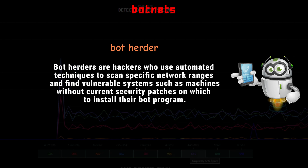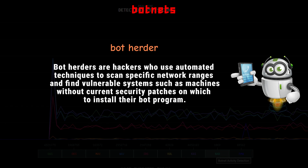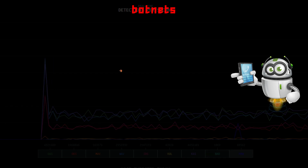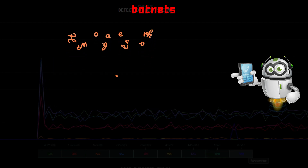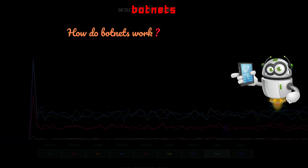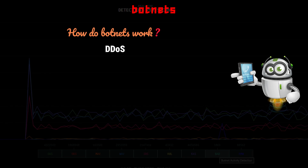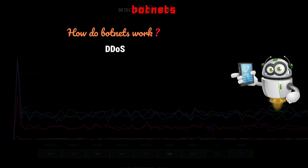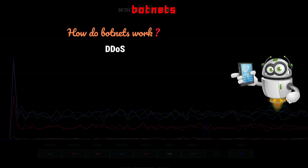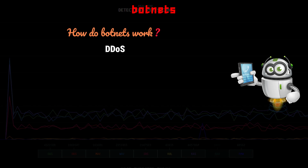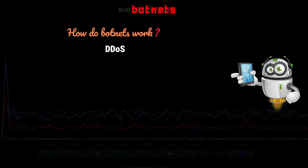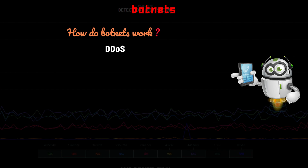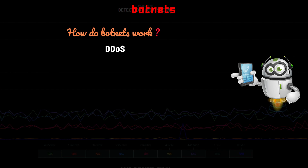When used by cyber criminals, botnets are especially useful for carrying out large-scale attacks systematically. A distributed denial of service attack is a traditional botnet attack example. Botnets were originally used to carry out DDoS attacks or propagate spam.